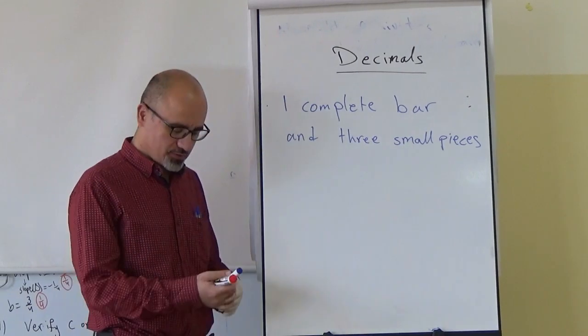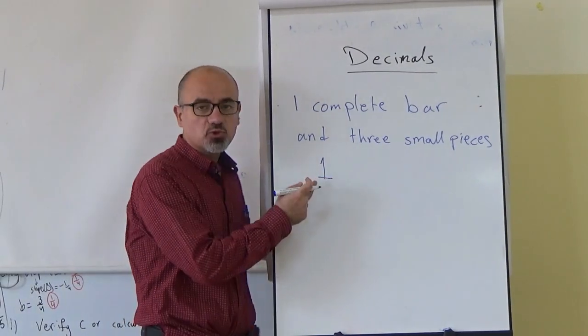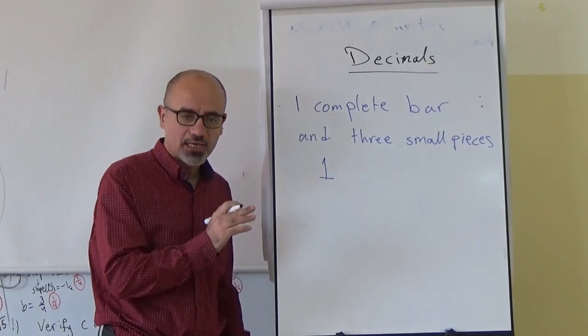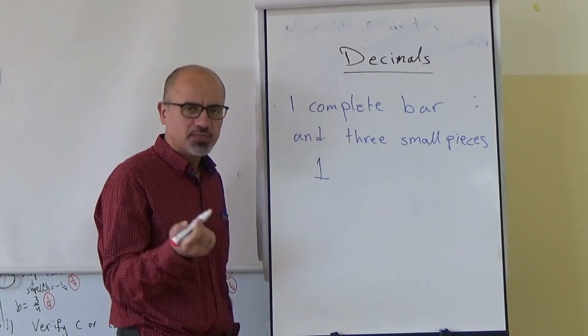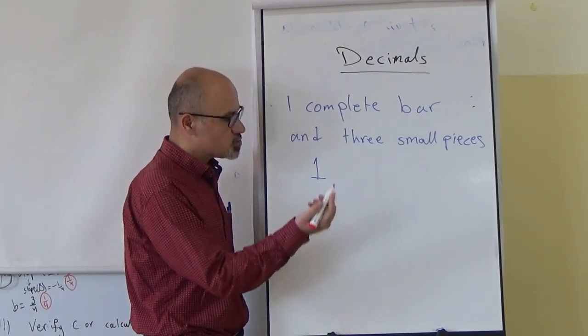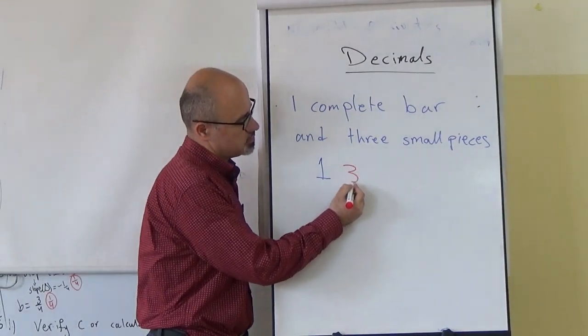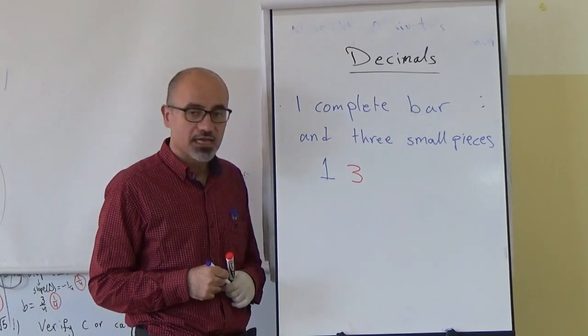So we have one complete bar of chocolate and three small pieces. Let's write it as a decimal number. It is one, corresponding to the complete chocolate bar, and three pieces, three small pieces. Each one of these pieces corresponds to one tenth, so we have three tenths.